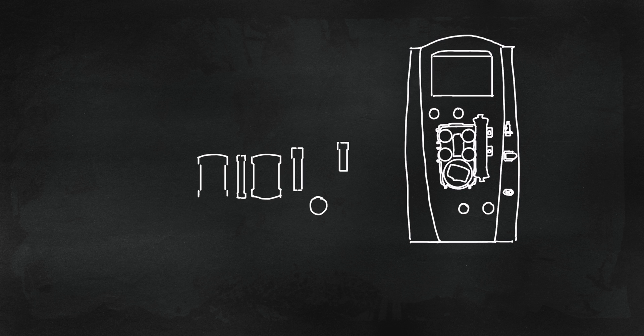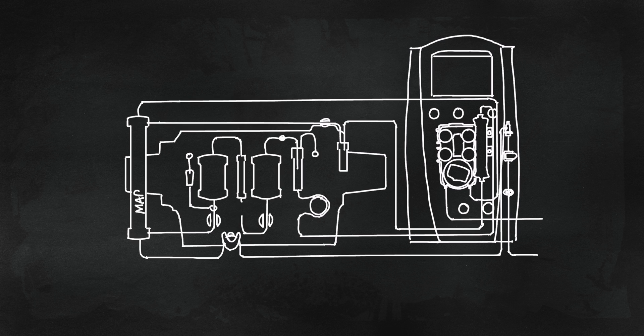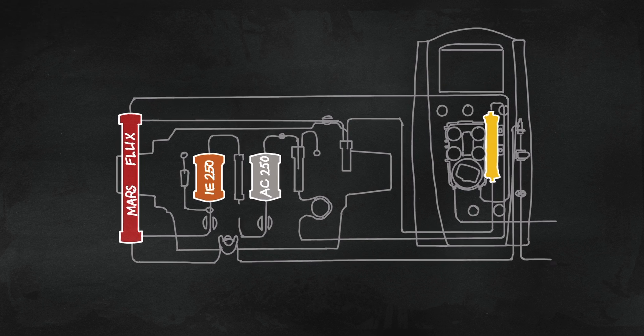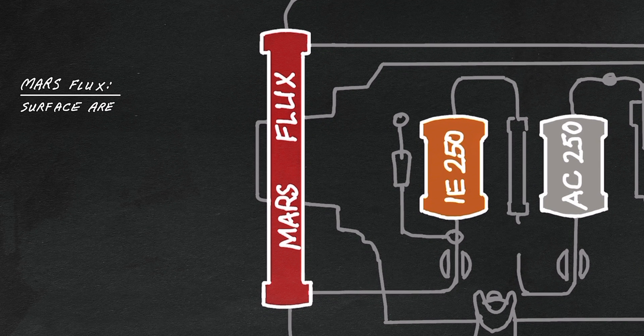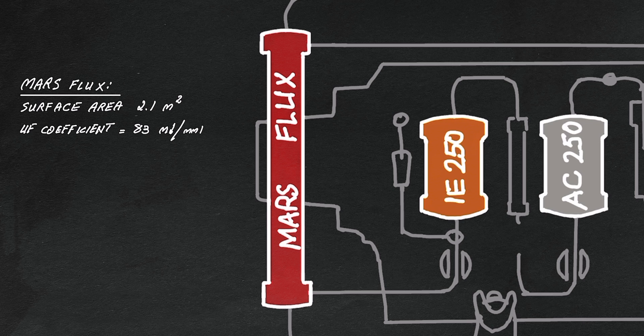Next, let's talk about the filters used in the MARS system. The MARS flux dialyser is a high-flux poly-sulfone filter with large surface area and high molecular weight cutoff, but low albumin sieving coefficient.